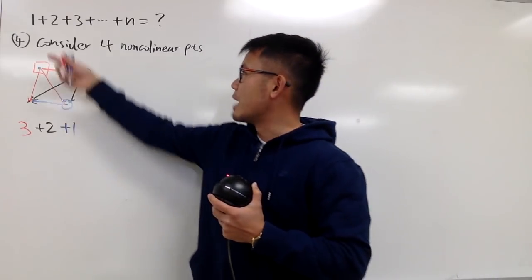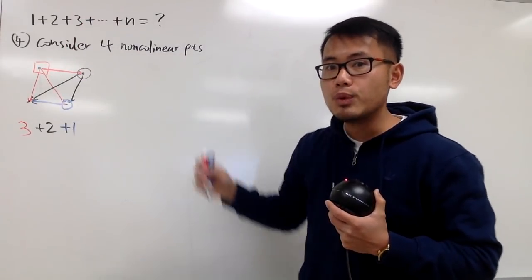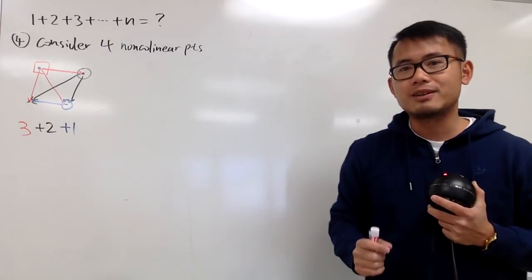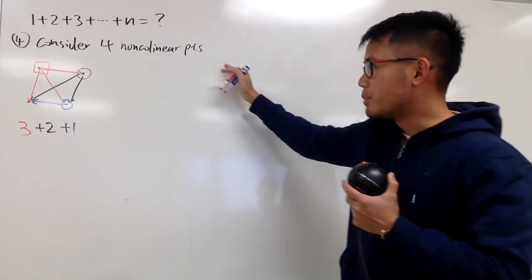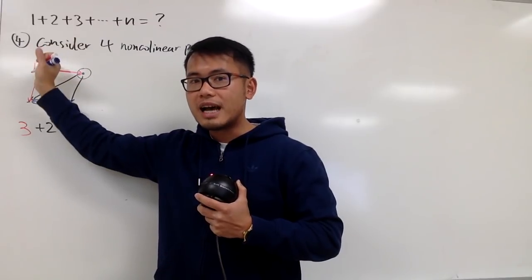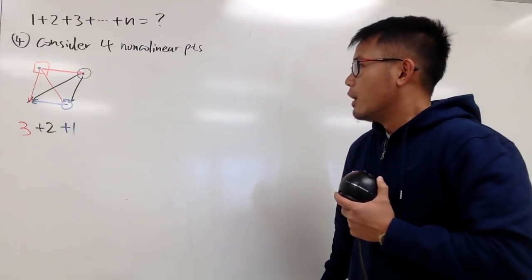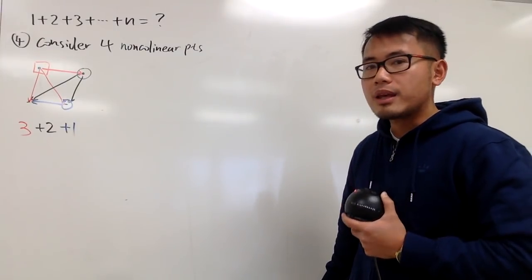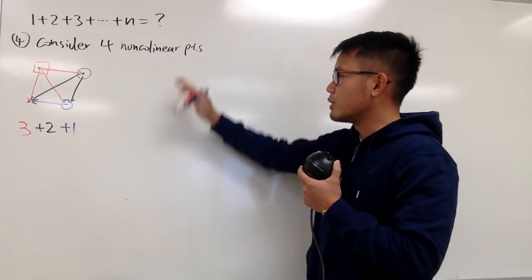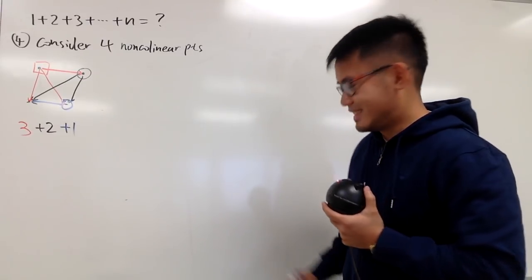And this is exactly the same thing that we are trying to do. You can imagine if you have seven non-collinear points, we will do one plus two plus three plus four plus five plus six, because once you pick the first point and fix it, you have six ways to connect the dots. We can count the number of segments that we can draw with four non-collinear points. But is there another way that we can do it? Yes, let's take a look.